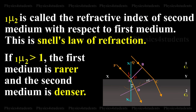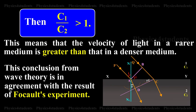If 1 mu 2 is greater than 1, the first medium is rarer and the second medium is denser. Then C1 by C2 is greater than 1. This means that the velocity of light in rarer medium is greater than that in a denser medium.